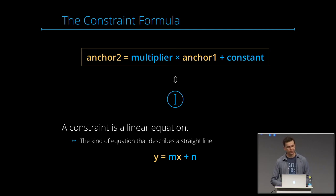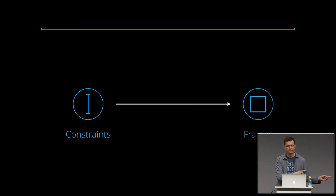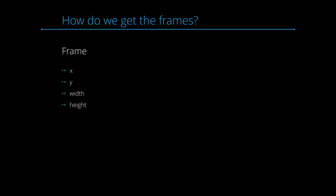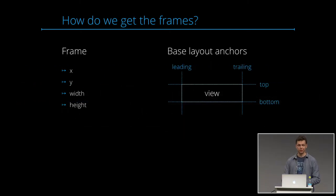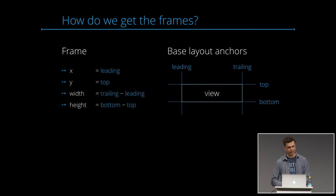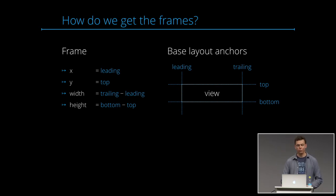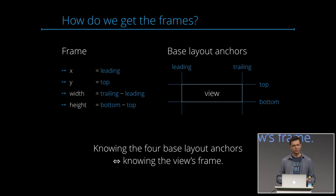Now we have a powerful way to describe layouts with constraints. But how do we get from constraints to frames? In the end, the system needs to know where to position all views. A frame is described by x, y, width, and height, and these correspond to the four base layout anchors. If we know the actual values of leading, trailing, top, and bottom, we know the view's frame. So we need to find the coordinates of the base layout anchors, and then we know where to put the frames and what size they have on screen.